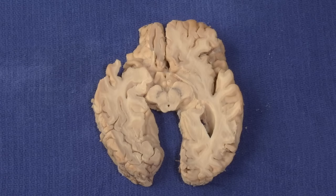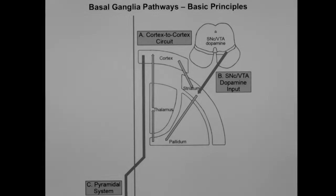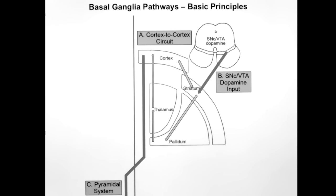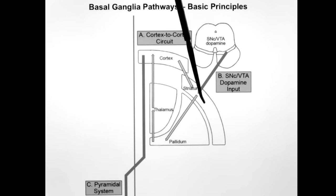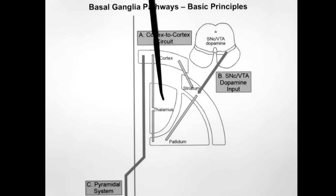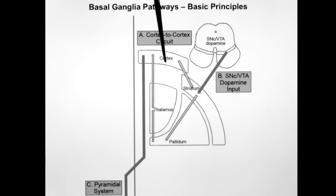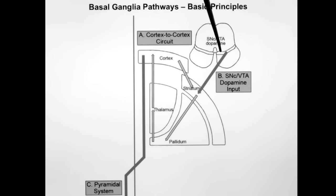Now let's look at the circuitry using a computer diagram. We're going to tackle the hard part in the simplest form, using diagrams from colleague Stephen Voron. The structures we've identified are: the striatum (caudate and putamen), the globus pallidus, the thalamus, the cerebral cortex, and the midbrain with the substantia nigra and ventral tegmental area.